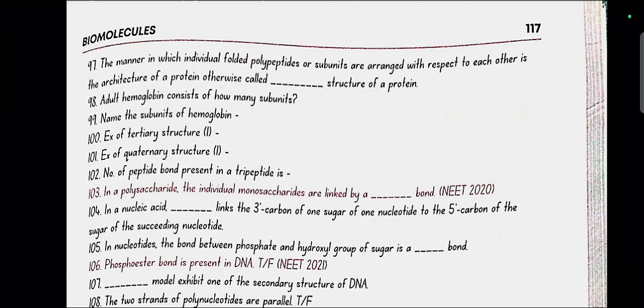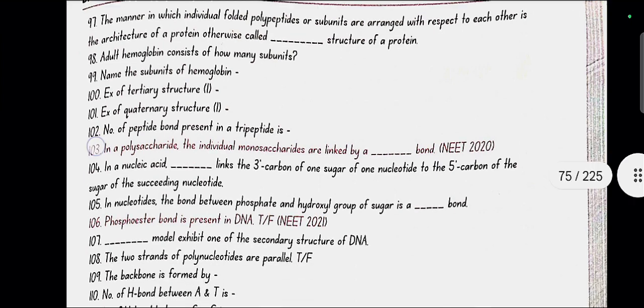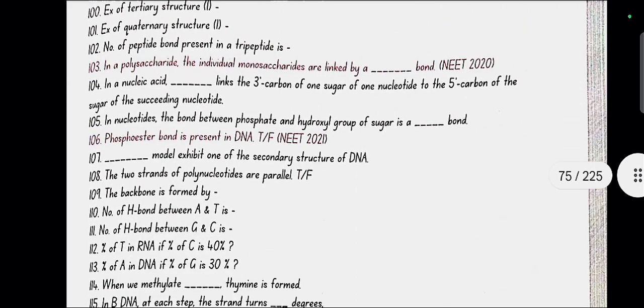Adult hemoglobin consists of 4 subunits. Name the subunits of hemoglobin: alpha subunit and beta subunit. Example of tertiary structure: myoglobin. Example of quaternary structure: hemoglobin. Number of peptide bonds present in tripeptide is 2.